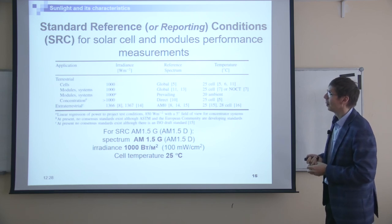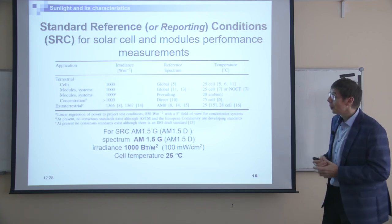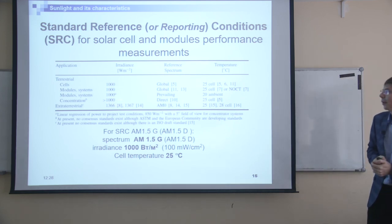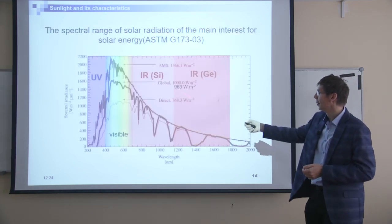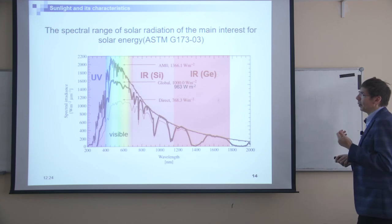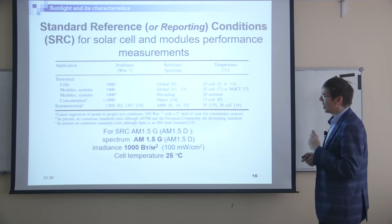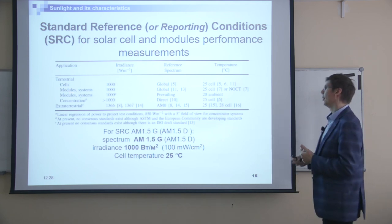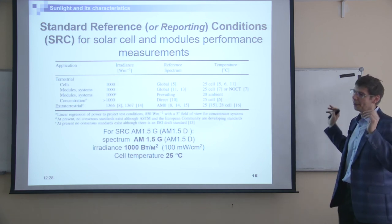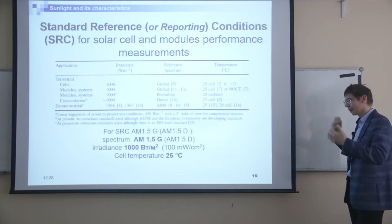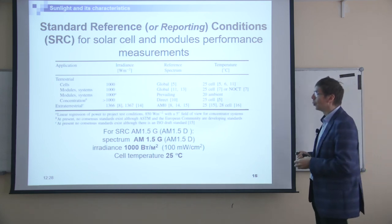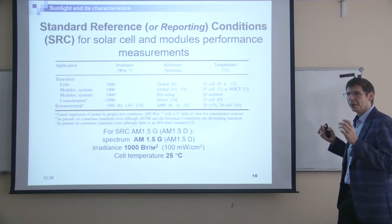For concentrating solar cells, for one sun we also use 1 kW/m², despite the fact that the real value for AM1.5D is a little bit less. The reason is that normally for concentrator solar cells the intensity changes over a quite wide range — up to 1000 sun or even 10,000 sun — so there's no reason to be too precise for one sun.